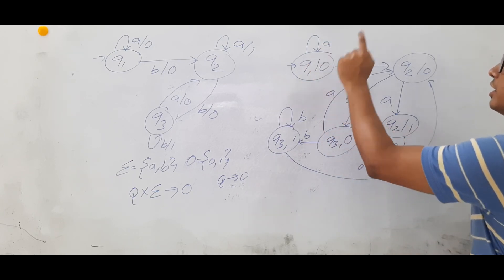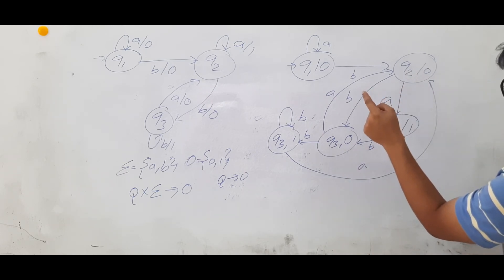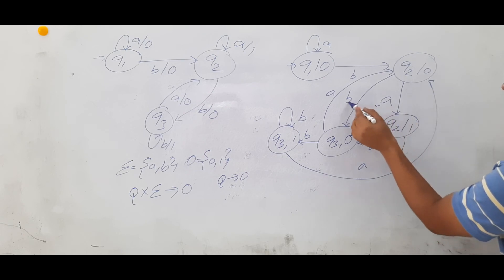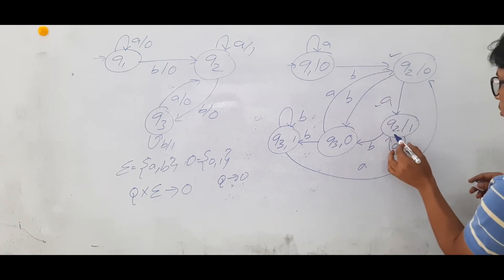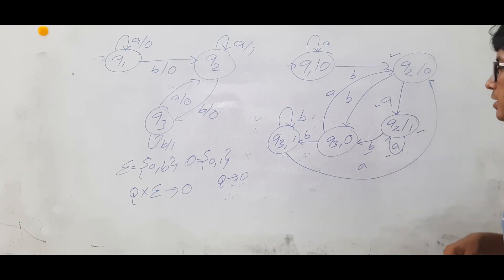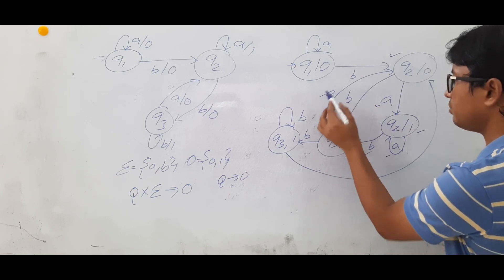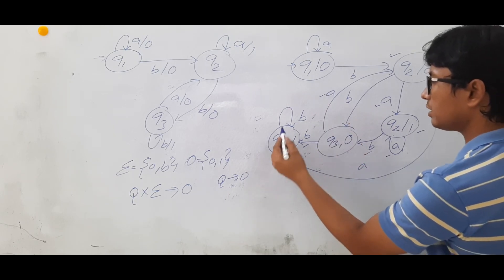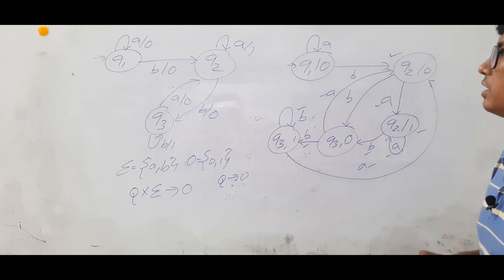From Q1 on A and B you have a move. Q2/0 on A you have a move, on B you have a move — done. Q2/1 on A you have a move, on B you have a move — done. Q3/0 on A you have a move, on B you have a move — done. Q3/1 on B you have a move, on A you have a move — done.